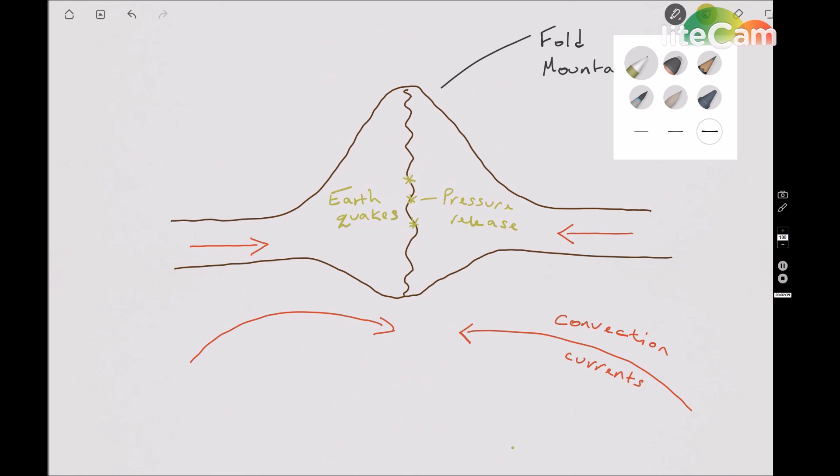Between these two plates you tend to get a lot of pressure release and you tend to get earthquakes. You do not, however, get volcanoes or any other form of lava escaping, simply put because the plate has become thicker and larger.